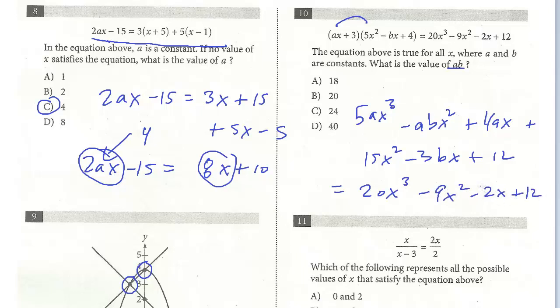20x cubed minus 9x squared minus 2x plus 12. So this really looks like an awkward, complicated problem. But just pay attention. What's the question asking for? Now, if the question were, let's say, just asking for a. Okay,